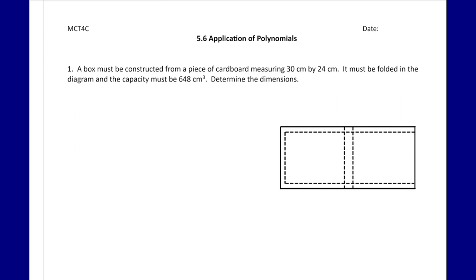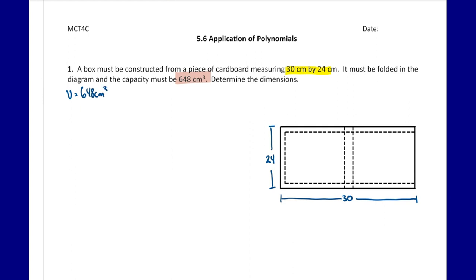In our first question, a box must be constructed from a piece of cardboard measuring 30 centimeters by 24 centimeters. It must be folded as shown in the diagram, and the capacity must be 648 centimeters cubed. We want to determine the dimensions of the box. We know volume equals length times width times height.